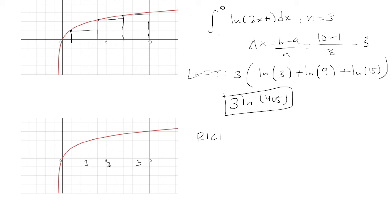For the right-hand Riemann sum, we have to start on the right. So we're going to start here at x equals 10. And again, the base is going to be 3. So we go 3 across.